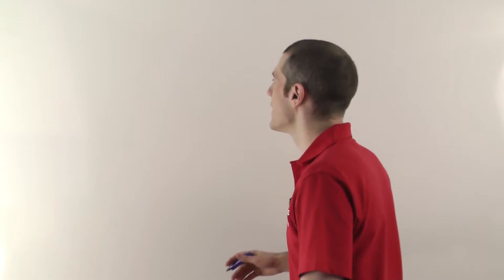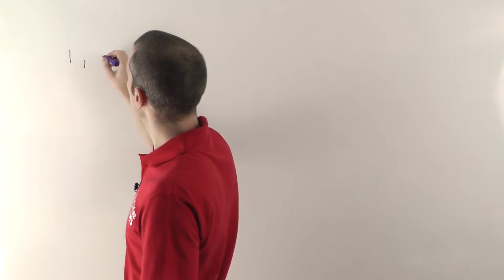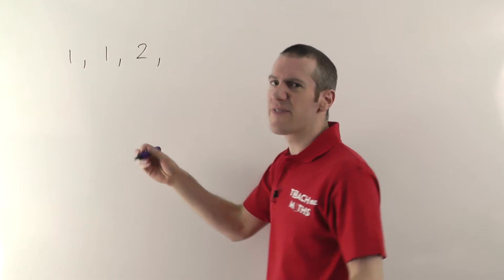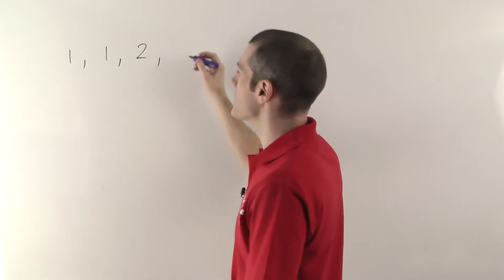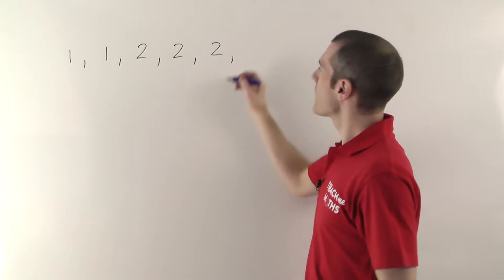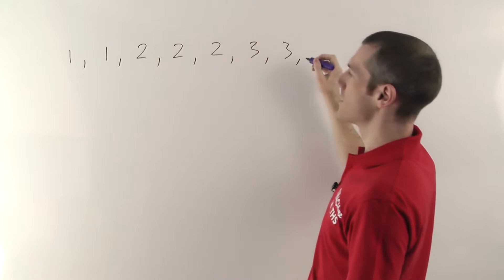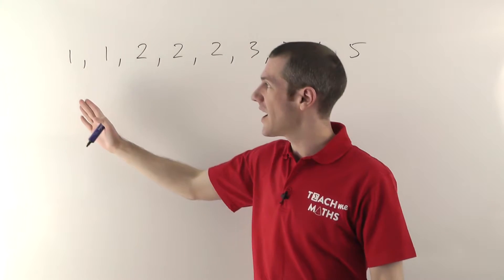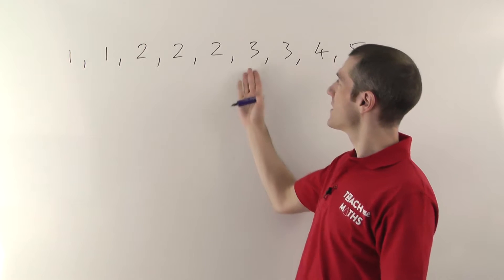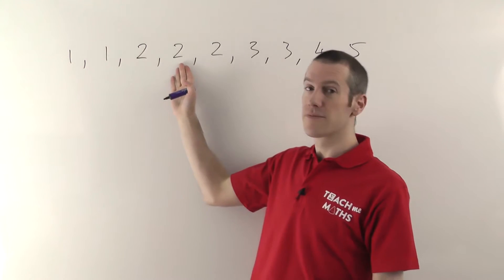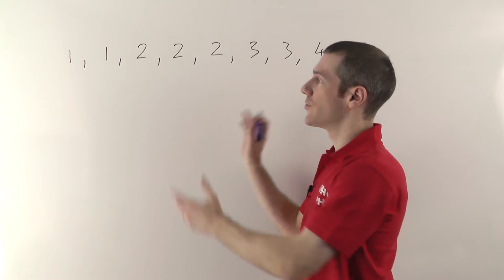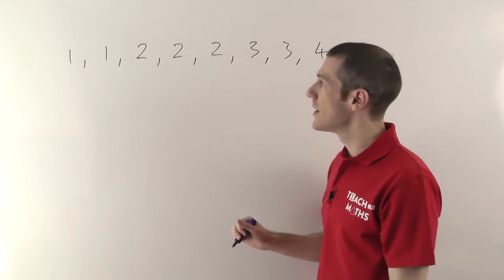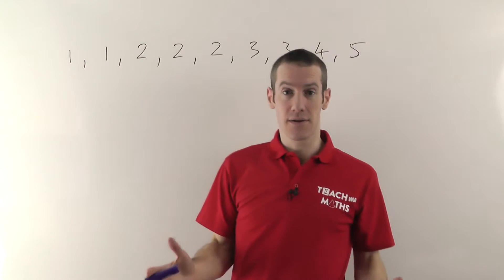We'll start with a list of numbers. Imagine I've gone around and asked a bunch of different families how many children they have. The first family had one child, the next had three, the next had two, and so on. I've arranged them all in order, smallest numbers first through to the largest numbers at the end.